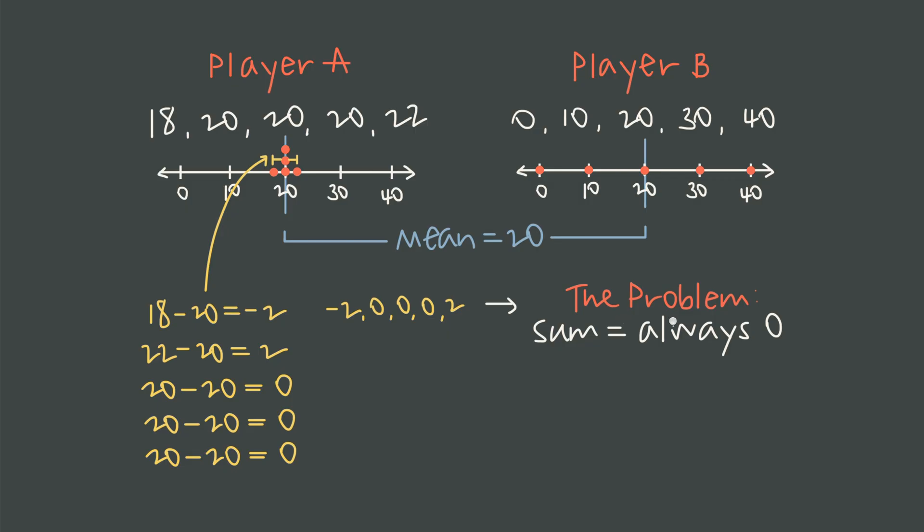So the question we've identified is, how can we find an average distance if this sum is always uselessly 0? Well, we need a way to make all these deviations positive, and the most powerful way to do that is to square them. That's going to be our fix for this problem we identified. A negative number squared always becomes a positive number, and player A's deviations in particular become positive 4, 0, 0, 0, and positive 4. Now with all the numbers positive, when we add them up, they can't cancel each other out. And squaring the deviations also has the nice side effect of giving more weight to values that are far from the mean, which we'll see later on, is going to be very useful.